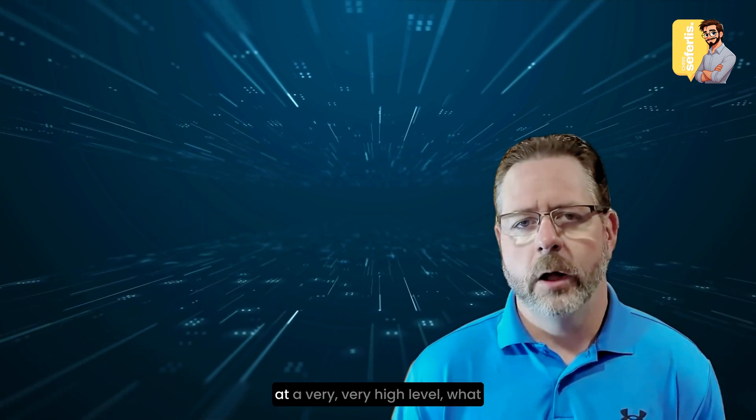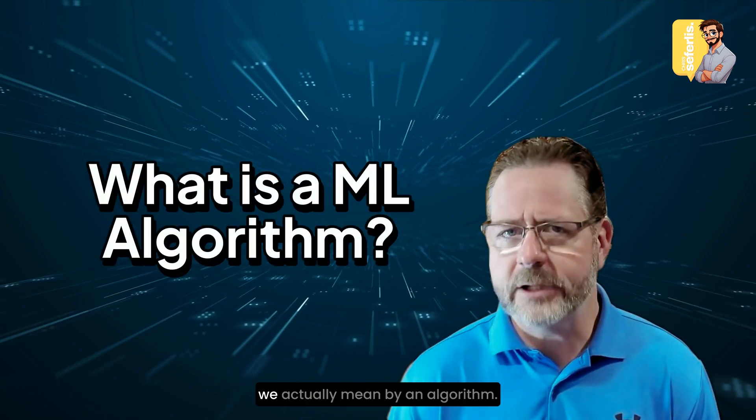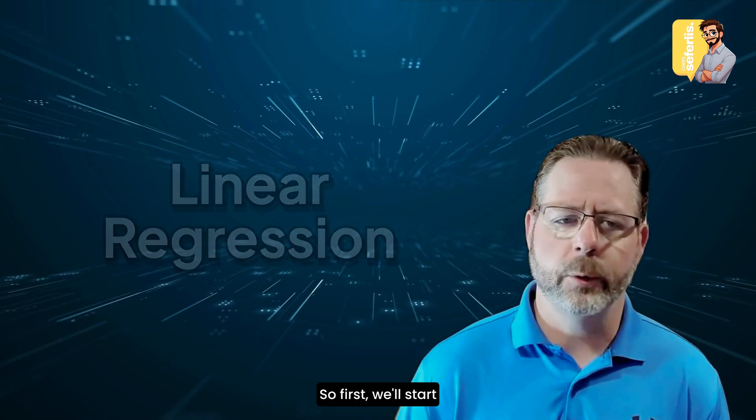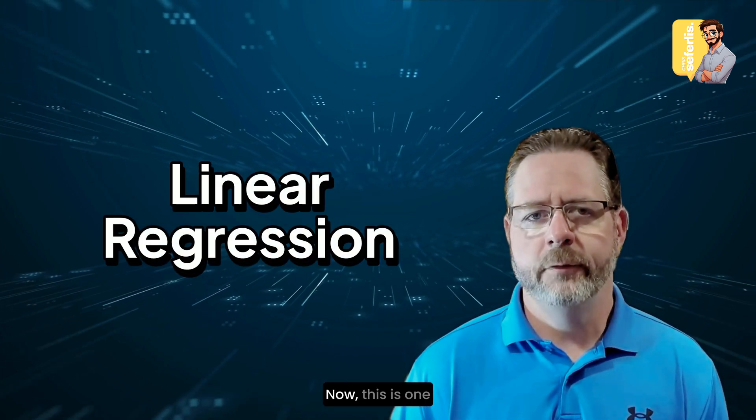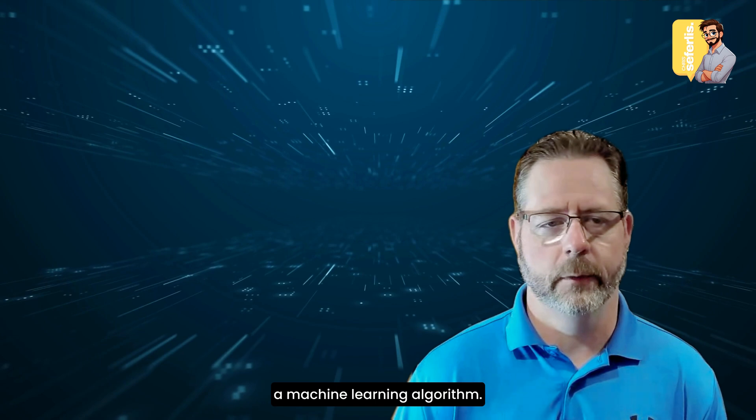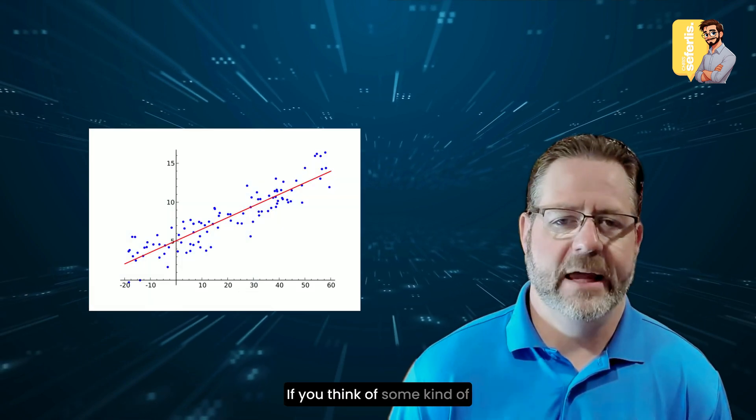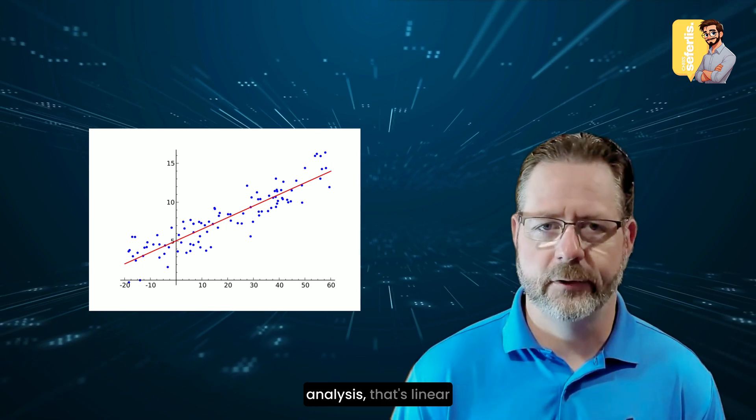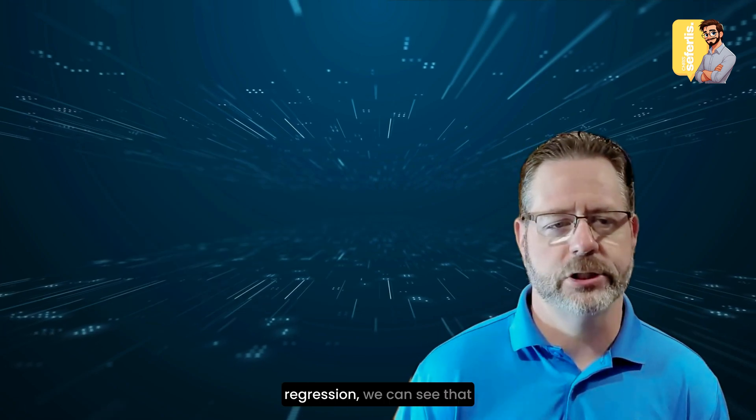So let's talk about, at a very high level, what we actually mean by an algorithm. So first, we'll start with linear regression. Now, this is one of the simplest forms of a machine learning algorithm. If you think of some kind of scatter plot with a line going through it, doing a trend analysis, that's linear regression.